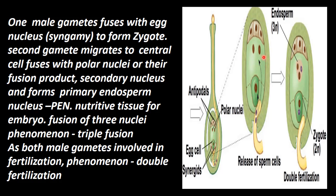The male gametes are haploid, and the egg cell is also haploid. This fusion is a fertilization event. The egg cell fusing with a gamete is one fertilization, and the second gamete fusing with the polar nuclei is another — that is called double fertilization.